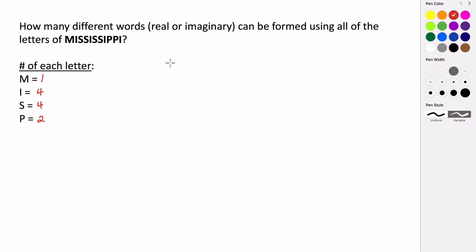So that means, remember, in the numerator we have our total number of objects factorial, divided by the number of times each one occurs factorial. So divided by 1! times 4! times 4! times 2!.